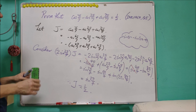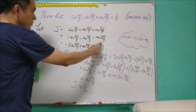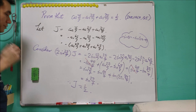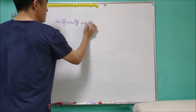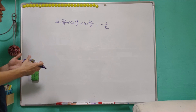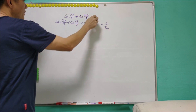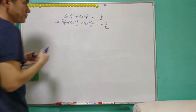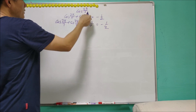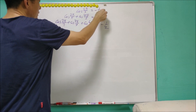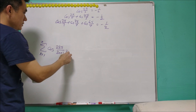Let us look at a simple generalization. Focusing on writing J as cos(2π/7) + cos(4π/7) + cos(6π/7), we know that this sum equals negative one half. This suggests: what about cos(2π/5) + cos(4π/5)? It is not difficult to prove that this equals negative one half as well. The first pattern term is cos(2π/3), which equals negative one half. So the first generalization is: the sum of cos(2πk/(2n+1)) for k from 1 to n equals negative one half.